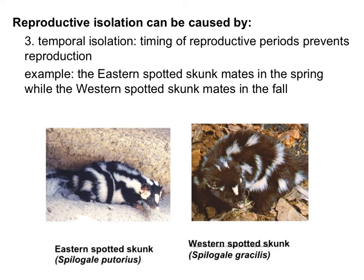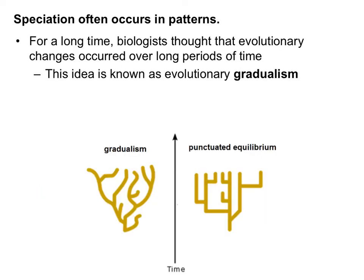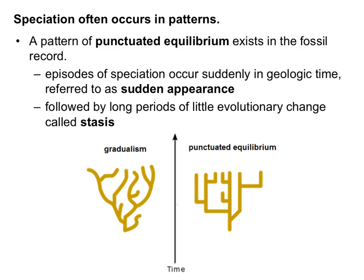Another example of temporal isolation would be trees and other plants when they pollinate — this can start separating populations and forming new species. For a long time, biologists thought evolutionary changes occurred over long periods of time, an idea known as evolutionary gradualism — that evolutionary changes happened very, very slowly. What we've actually learned is that a pattern of punctuated equilibrium exists in the fossil record. Punctuated equilibrium shows that episodes of speciation occur suddenly in geologic time, referred to as sudden appearance, followed by long periods of little evolutionary change called stasis.